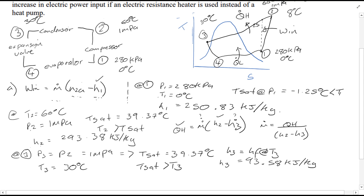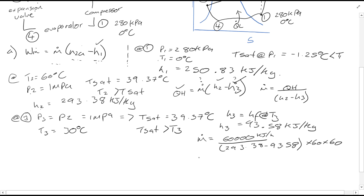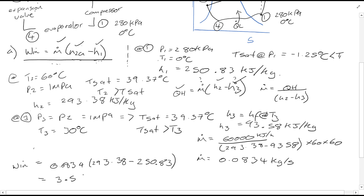Now that we have all the values needed, we can find the mass flow rate. Don't forget to convert QH from kilojoules per hour into kilowatts by dividing by 3600 seconds. This gives a mass flow rate of 0.0834 kg/s. Looking back at the W_in equation, we now have all required values, and W_in is calculated to be 3.55 kilowatts.